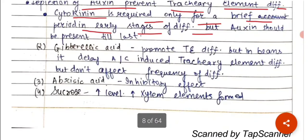Gibberellic acid promotes the tracheid element differentiation. But in beans, it delays the auxin cytokinin ratio induced tracheid element differentiation, but doesn't affect the frequency of the differentiation.